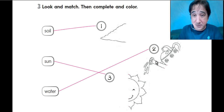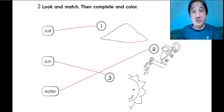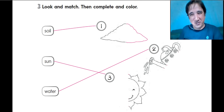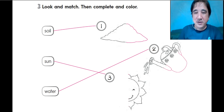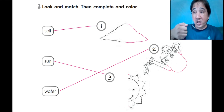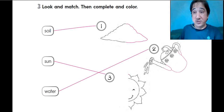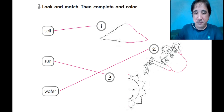Look, there's a part missing. I'll complete here — the soil. It looks like a cloud, but it's soil. If you color it brown, it will be perfect. The next one is the water. You have a sprinkler there, and you use that to put water in your plants. So I complete — I didn't color, but I complete.